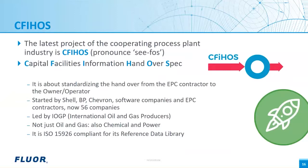The latest project of the cooperating process plant industry is CFIHOS — Capital Facilities Information Handover Specification. It is about standardizing the handover from the EPC contractor to the owner-operator. The end result is a specification which can be used as part of the contract with EPC contractors. The handover data is to be loaded into a relational database, and the handover itself is by means of comma-separated value files. It was started seven years ago by Shell, BP, Chevron, software companies, and EPC contractors, but now has 56 companies participating.